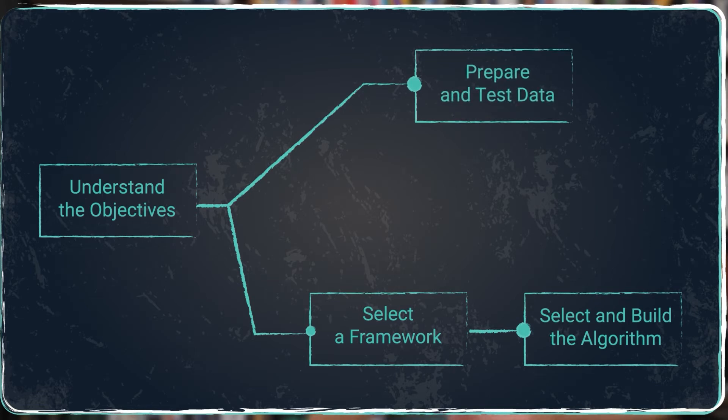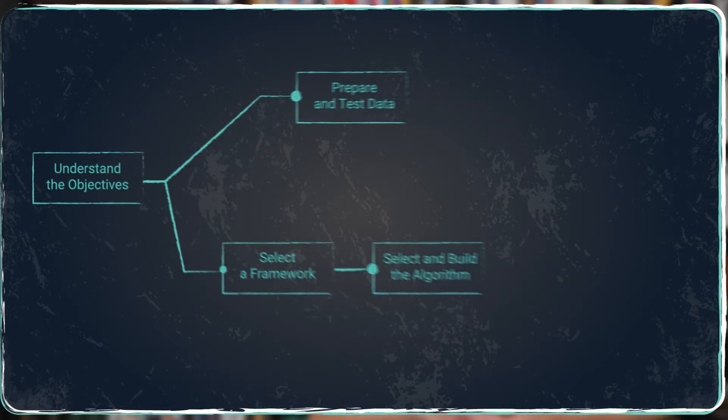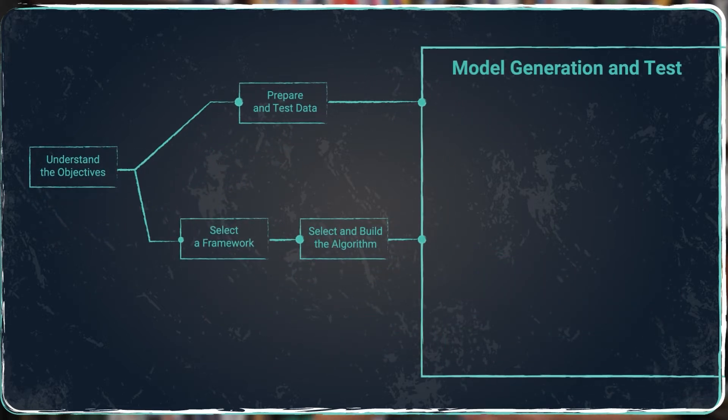This process consists of data acquisition, data pre-processing, exploratory data analysis, and feature engineering. The data used by the model will be based on the set objectives and used by all activities in the model generation and test phase. For example, if we have a real-time trading system, we will require market data which must be representative. It is also possible to use pre-gathered datasets for the initial training.